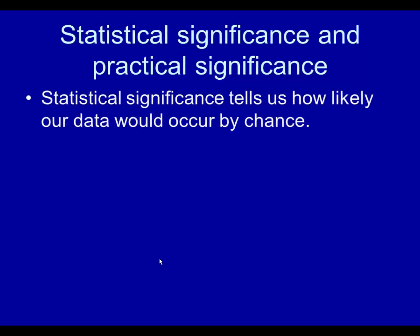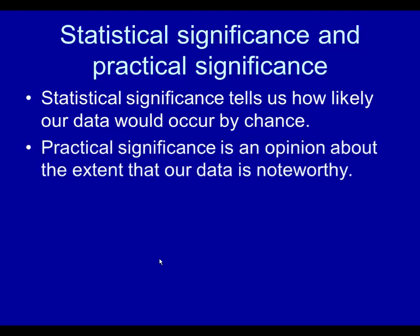Let's look at the question of statistical significance and practical significance. Statistical significance tells us how likely our data would occur by chance. If it would occur by chance a lot, then we don't have much confidence that we have anything of value — it's just chance that we have discovered. Practical significance is an opinion about the extent that our data is noteworthy. Some data could be statistically significant but not practically significant, because even though the data is not easily explained by chance, the strength of the relationship between the variables may just not be very noteworthy.